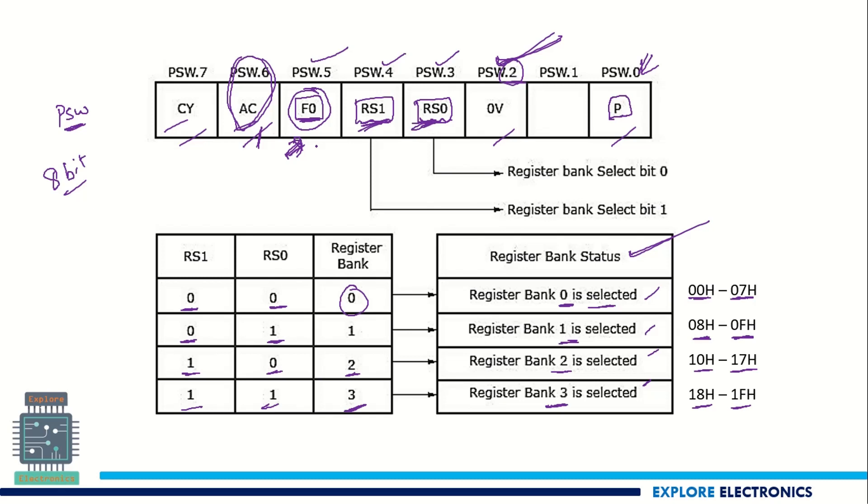So this is the PSW register of 8051. It is very useful in many cases. We are going to use in programming if this bit is set. Suppose if you want to check, there will be an instruction where it is looking at the carry. So if carry is set, if carry is not set, then you need to take the decision. In such cases we are going to use the carry flag or auxiliary carry flag and if there is any overflow in the output we can check with the overflow flag and number of ones in the accumulator.